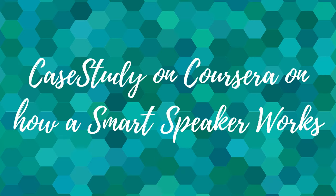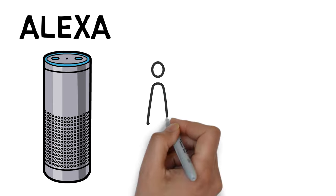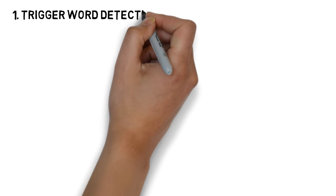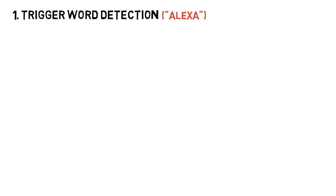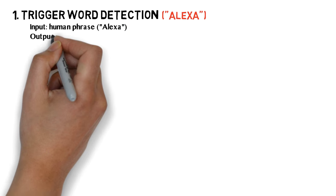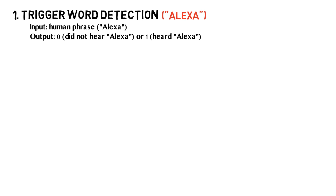Now let's look at another example — a case study on how a smart speaker works. Let's walk through exactly how Alexa works, which can be broken down into four steps. The first step is trigger word detection — in this case, that'd be 'Alexa.' Whenever Alexa hears this phrase, it knows that a command is coming next. Alexa is programmed with an algorithm that takes in a phrase said by the human as input and outputs either a 0 or a 1, depending on whether or not the phrase matches 'Alexa.'